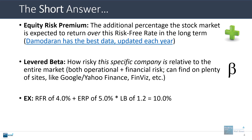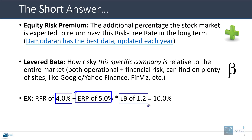Putting together all these pieces: let's say the current risk-free rate is 4%, the equity risk premium in the U.S. is 5%, and the company has a levered beta of 1.2 because it has been a little bit riskier and more volatile than the entire stock market. So 4% plus 5% times 1.2 gives you 10% for the cost of equity — a very simple calculation.